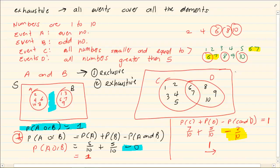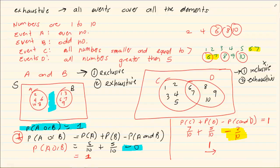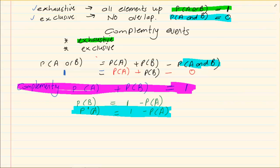But look at events C and D. Number 1 it was inclusive — there was an overlap. Number 2 it was exhaustive. But being exhaustive alone does not make it complementary, because it was inclusive it failed the test. So event A and B is complementary, but event C and D is not complementary. Thank you for watching.